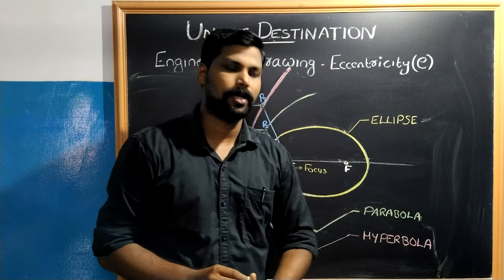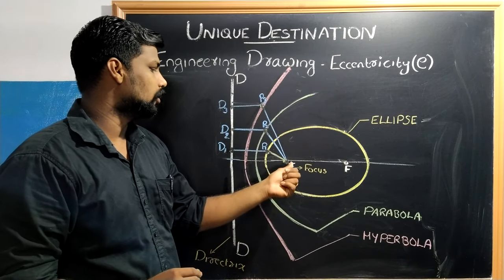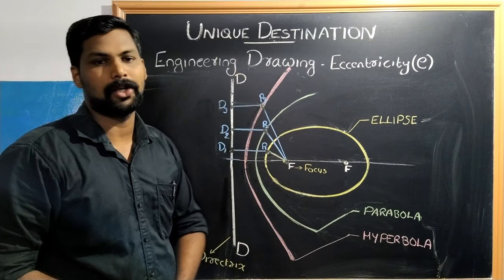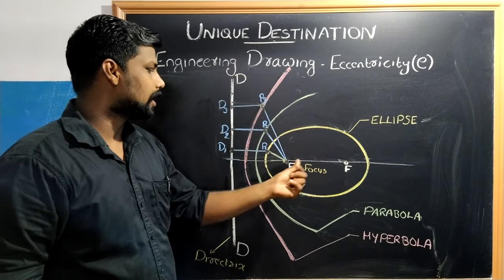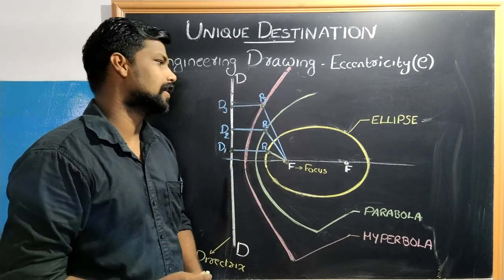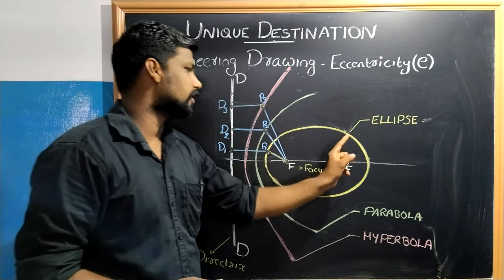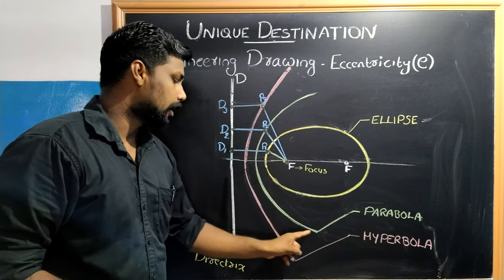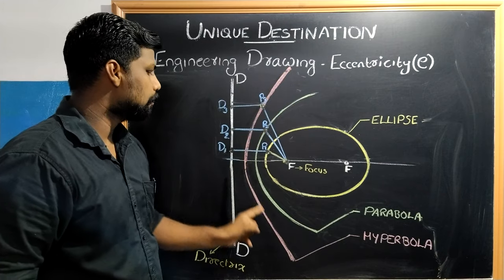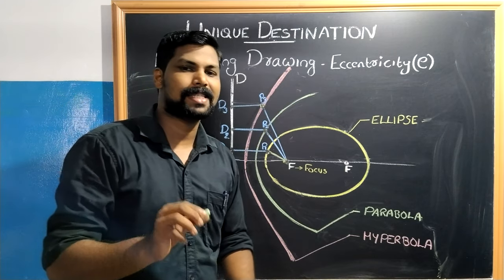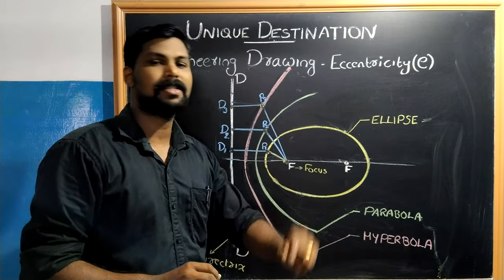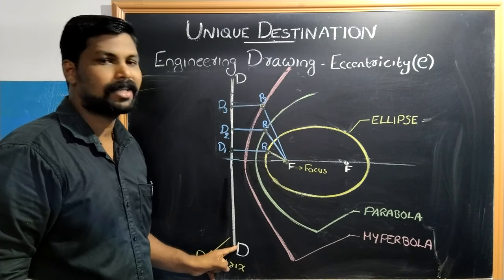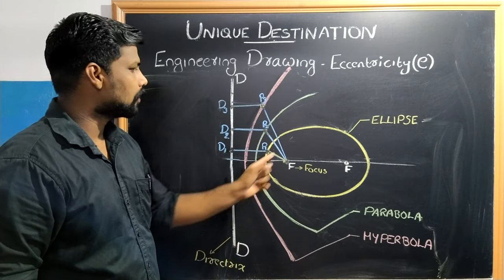We will discuss Eccentricity of Conics, including Focus and Directrix (DD). There are 3 types of conics: Ellipse, Parabola, and Hyperbola. We will discuss the Eccentricity, Focus, and Directrix for each.